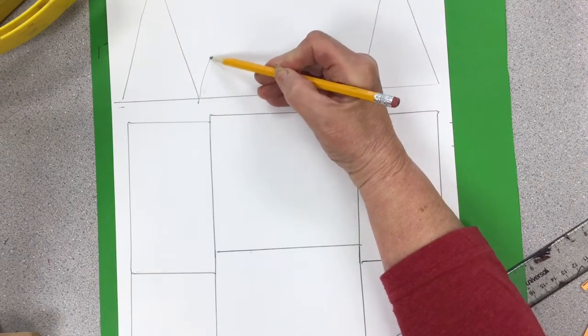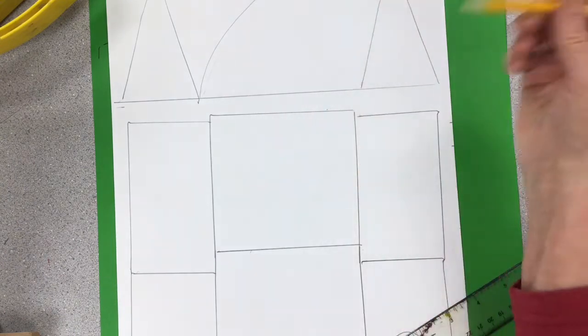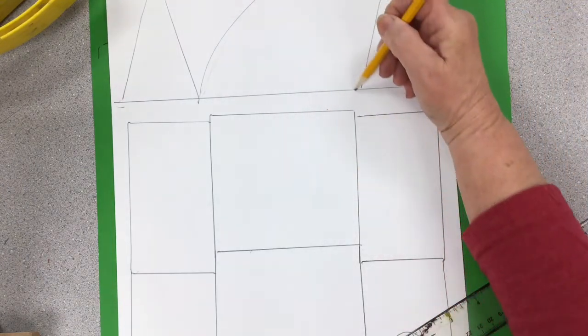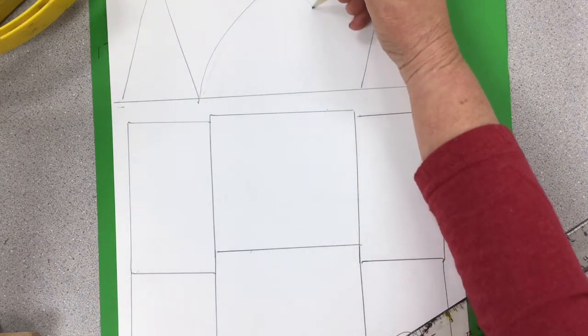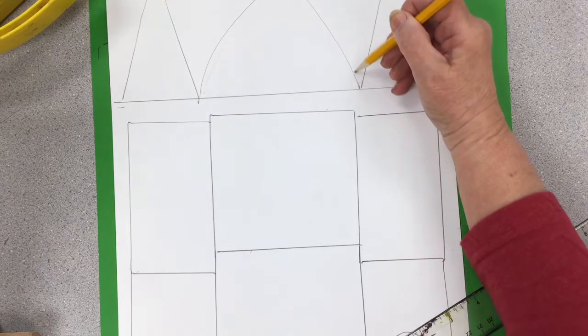And do I want to curve this? No, I think I'll make this a little bit of a curve. The pointed arch was one of the main features of Gothic architecture. So, I can curve that in a little bit.